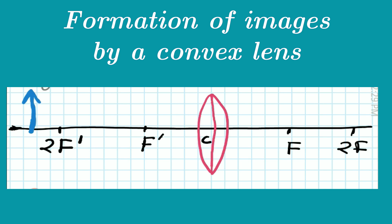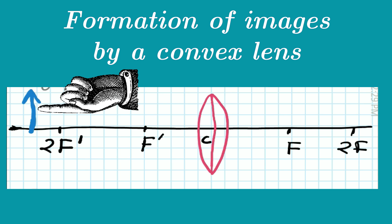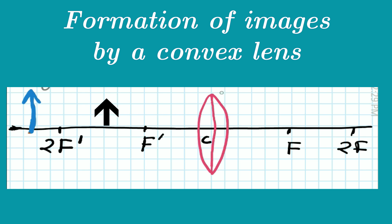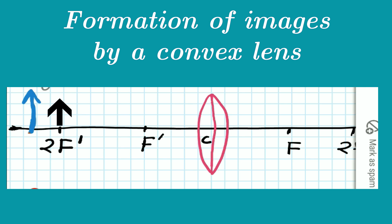In this video we will discuss the formation of different types of images with the convex lens. The type of image formed by a convex lens depends on the position of the object in front of the lens. We can place the object at different positions or distances from the convex lens to get different types of image.